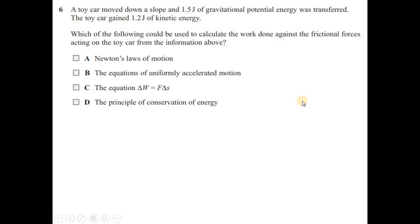Question 6: a toy car moves down a slope, transferring 1.5 J of gravitational potential energy, and gains 1.2 J of kinetic energy. Which of the following could be used to calculate the work done against friction? Newton's first law and equations of motion involve forces, not energies. The equation W = FΔs involves forces. Since only energy values are given, we use the principle of conservation of energy. The answer is option D.